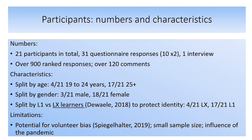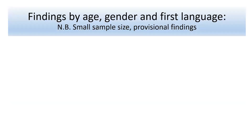Limitations of this research: there is a potential for volunteer bias — Spiegelhalter talks a lot about volunteer bias, and it does seem clear that certain social groups are much more likely to respond to questionnaires and surveys than others. It's also a small sample size, and it was influenced by the pandemic — yes, my main data was collected during the 2020-2021 academic year.